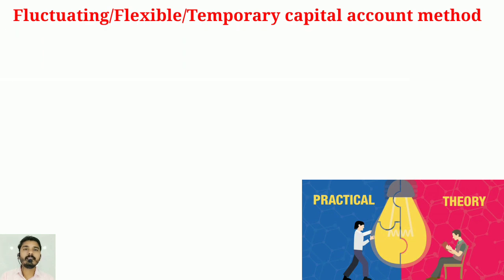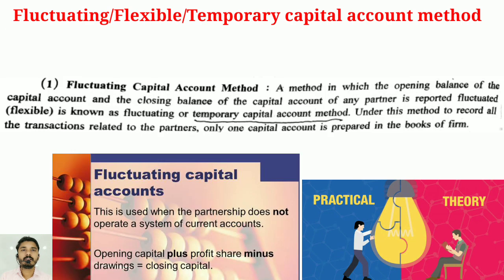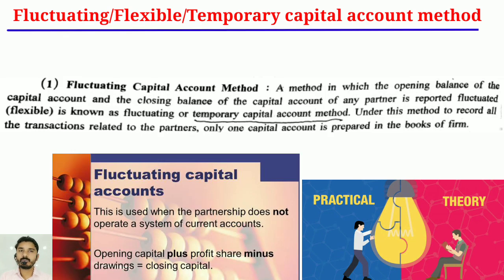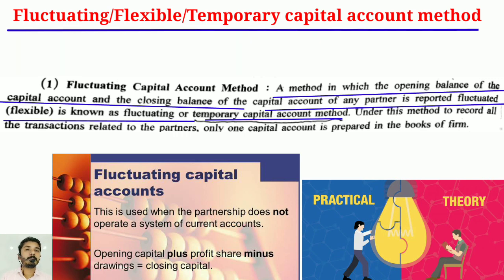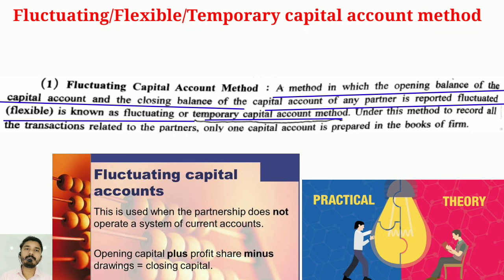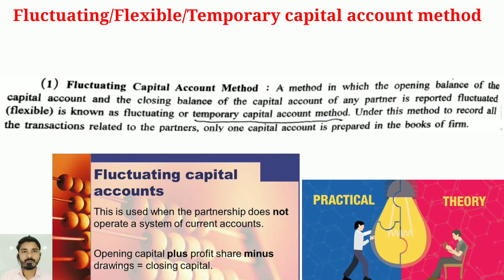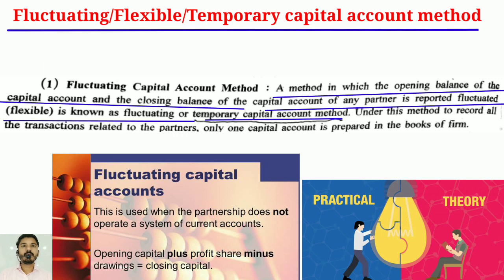Point number one: the fluctuating capital account method. This is a method in which the opening balance and the closing balance of the capital account of any partner is reported to fluctuate — meaning it is flexible. This is known as the fluctuating, or temporary, capital account method.